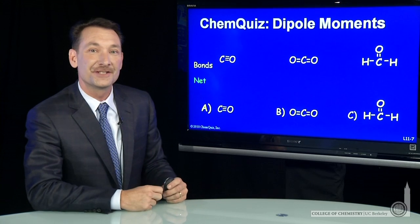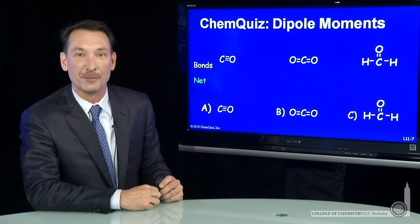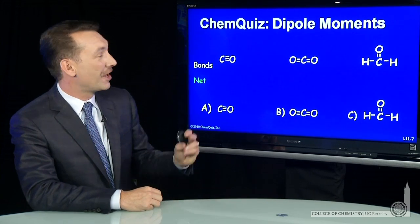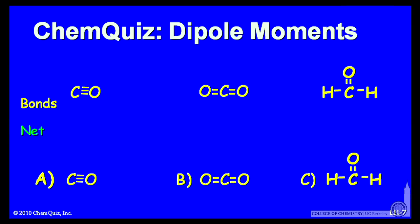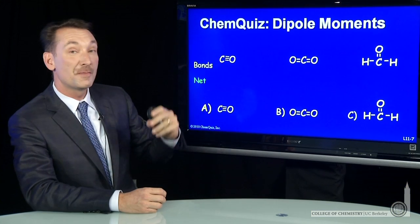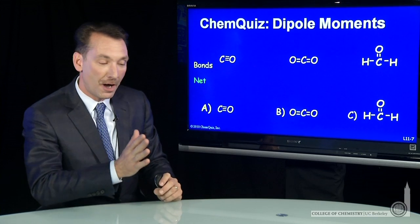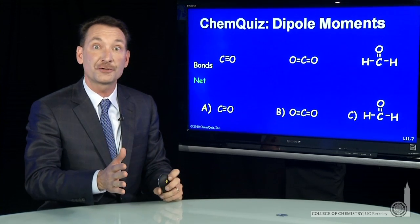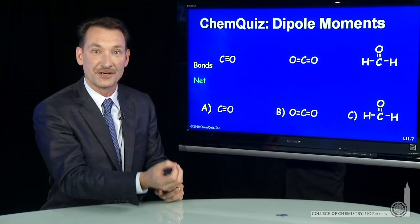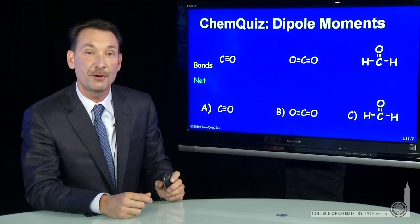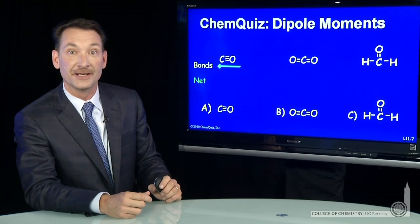We're looking at three molecules and trying to determine their electric dipole moments. Our three molecules are carbon monoxide, carbon dioxide, and acetone. Let's look at them in turn. Carbon monoxide is a diatomic molecule — two atoms with unequal electronegativities between oxygen and carbon. So there will be an electric dipole moment in carbon monoxide.